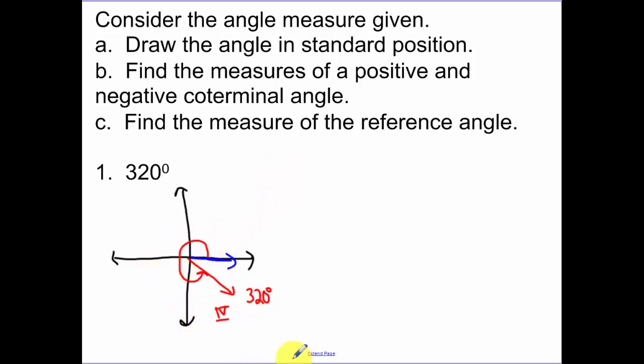Okay, part B. Find the measure of a positive and negative coterminal angle. So I have 320 degrees. If I add 360 to that, that's going to give me a positive coterminal angle of 680.